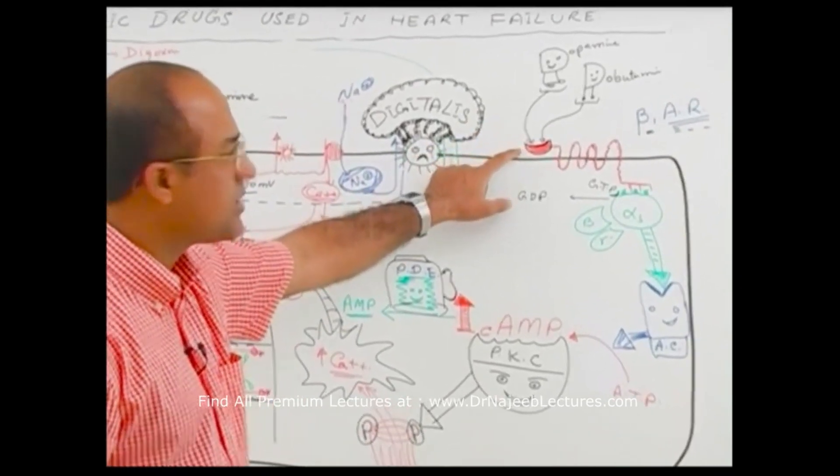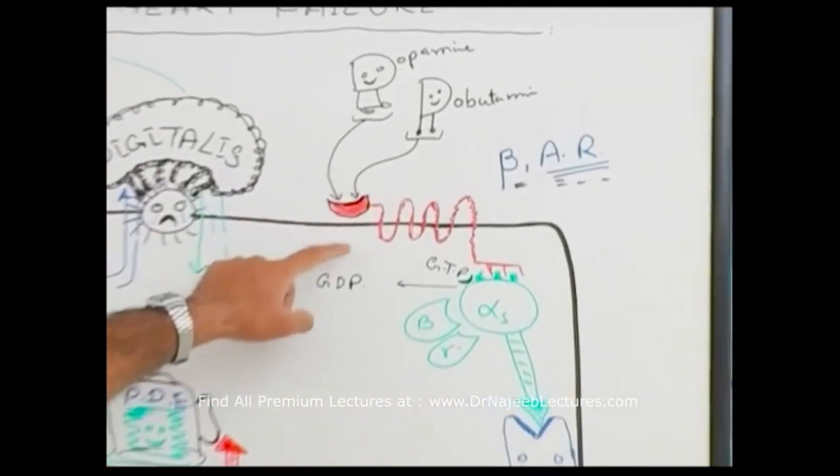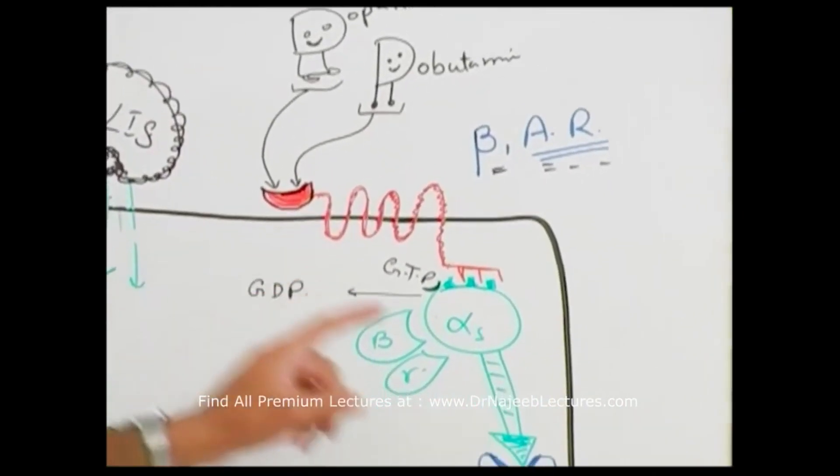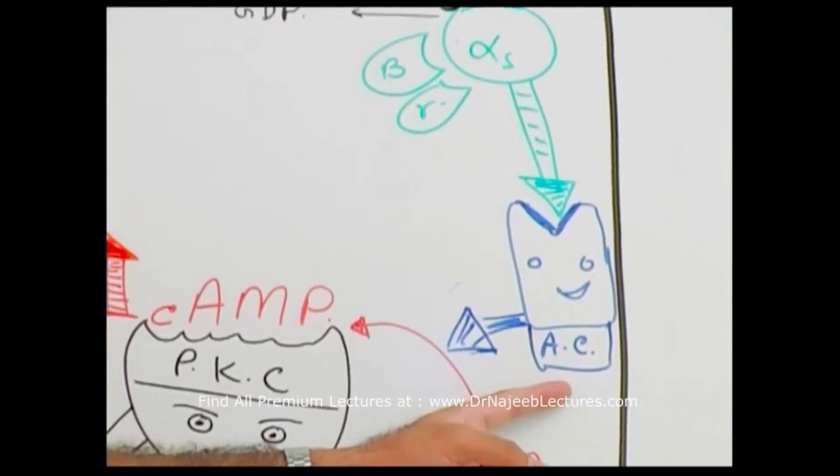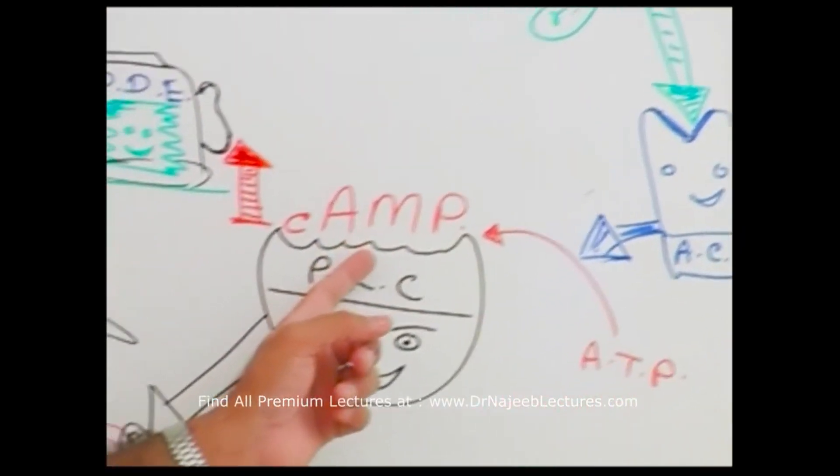Dopamine and dobutamine bind with beta-1 adrenergic receptor and stimulate it. That stimulates intracellular G proteins, G stimulatory, which stimulates adenylyl cyclase. This increases cyclic AMP level.